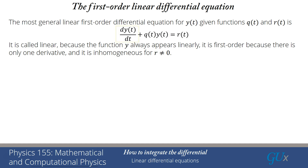It's first order because it only depends on one derivative, dy/dt. If it involves second derivatives, we call it second order and so forth. When r(t) is non-zero, we call it inhomogeneous, meaning it equals some function that is not zero. When r(t) is equal to zero, we call that the homogeneous equation.